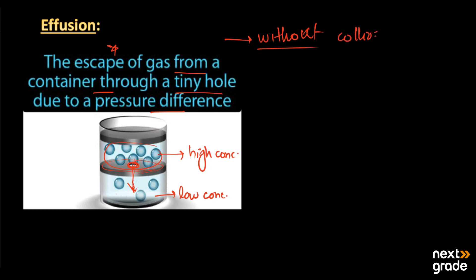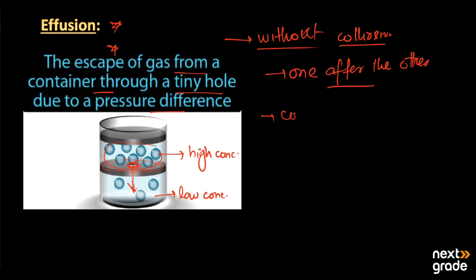In effusion, the molecules do not collide with one another — they move one after the other in a regular manner. Gas molecules are accustomed to colliding with the walls of the vessel, and when a molecule approaches the hole it moves through to the other side. This is the main characteristic of effusion.